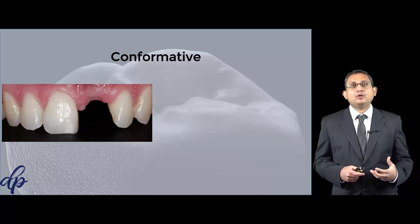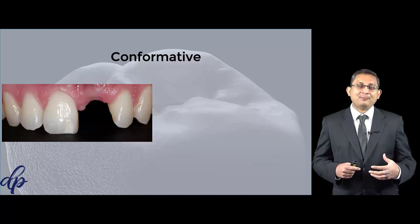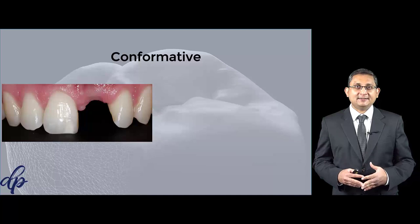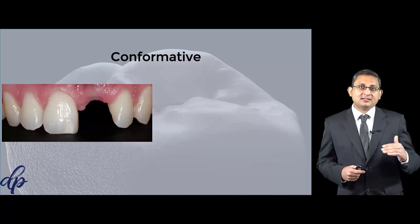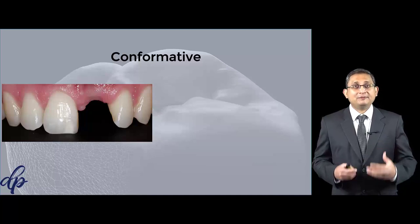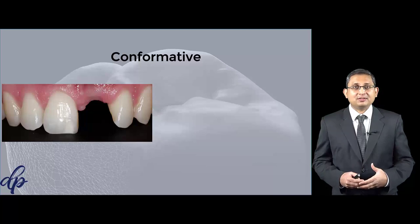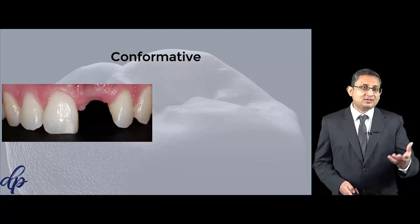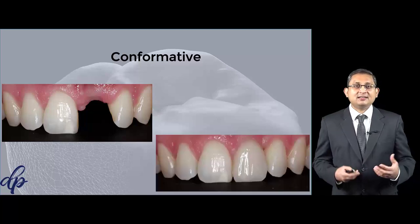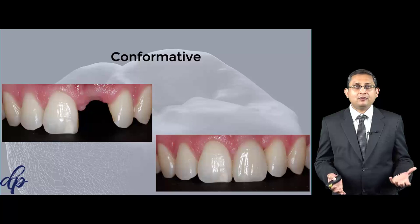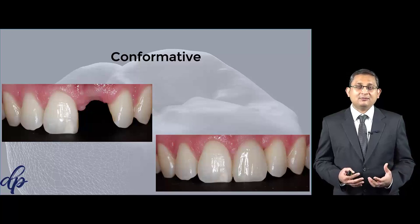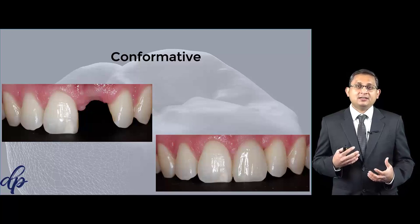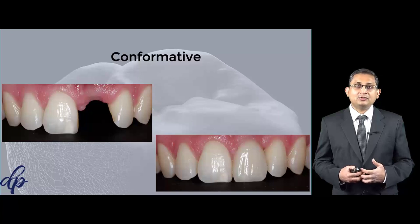If a small number of restorations are needed, then the laboratory process is very easy. These are the times when you're going to use the conformative approach, such as when doing single restorations. This is an implant restoration — I've conformed to the patient's dentition while doing the implant for the upper left tooth.